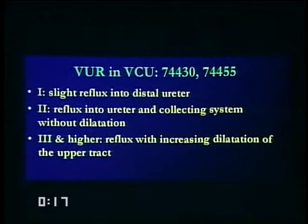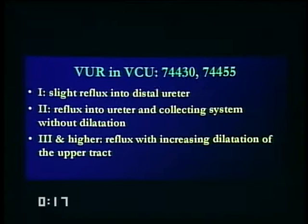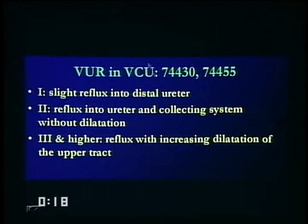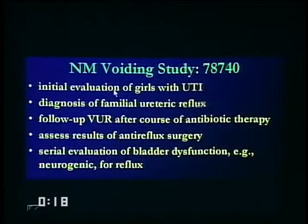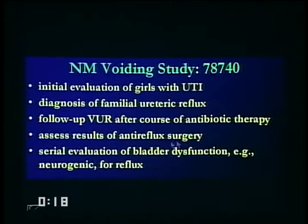For the urinary bladder, the most critical thing we're looking for is vesicoureteric reflux. The earlier threshold was at least three episodes of urinary tract infection in a child over one calendar year to qualify for a VCU. Now, even one episode of urinary tract infection with the child having been on antibiotics for at least 24 hours is an acceptable indication. A voiding study will assess the amount of reflux — whether it's in the ureter, or in the non-dilated or dilated ureter and collecting system. There are three grades for reflux using the nuclear medicine study. We always use it in girls. In boys, the first study is a contrast voiding study to evaluate urethral anatomy; all follow-up studies are done using nuclear medicine voiding studies.